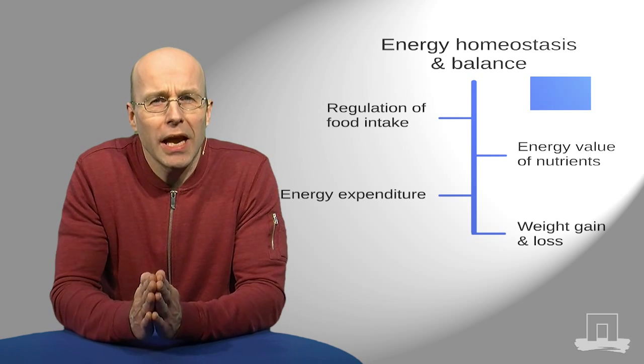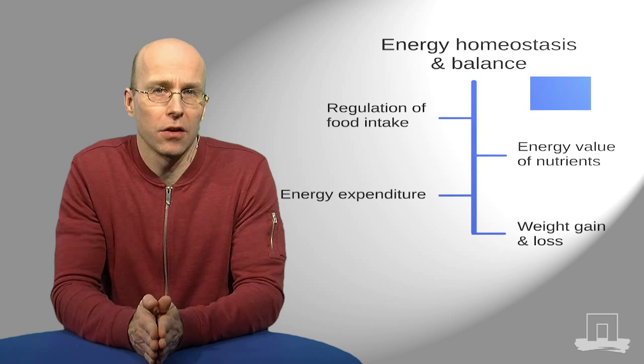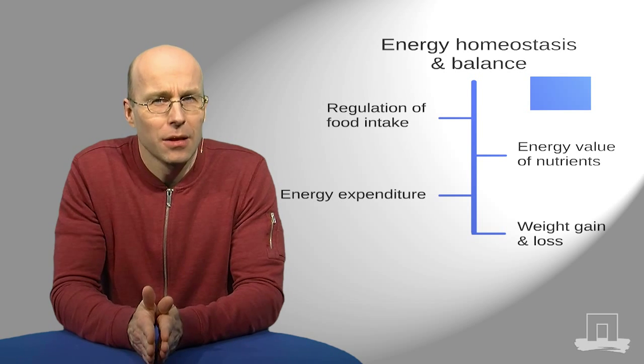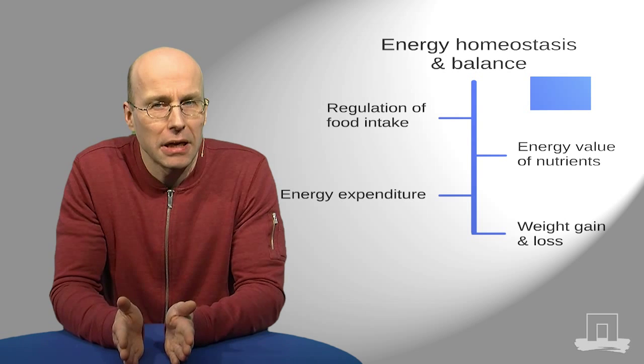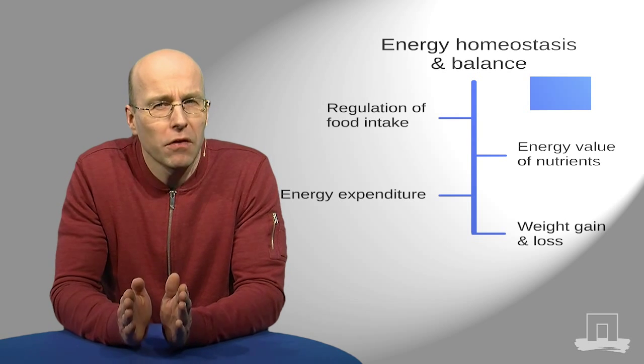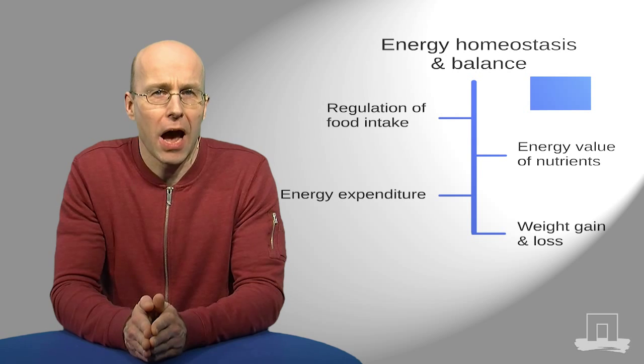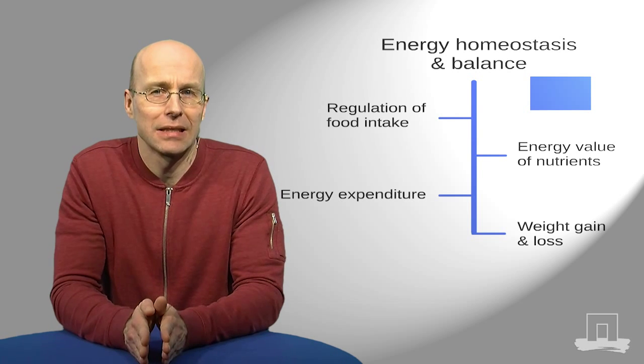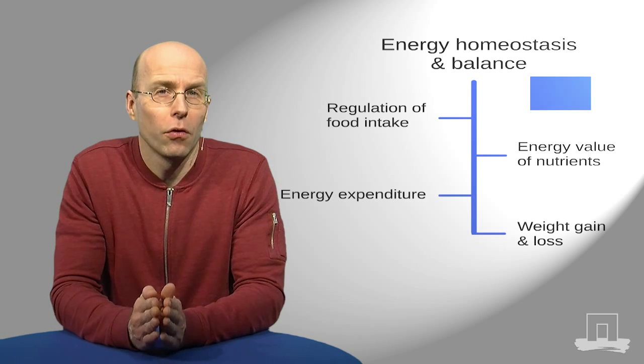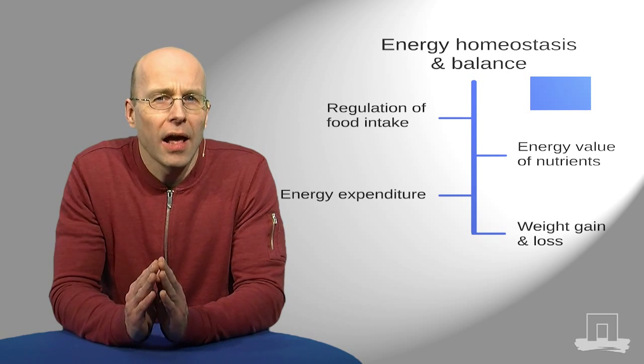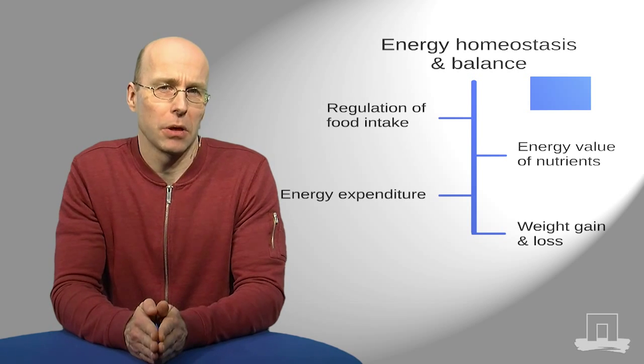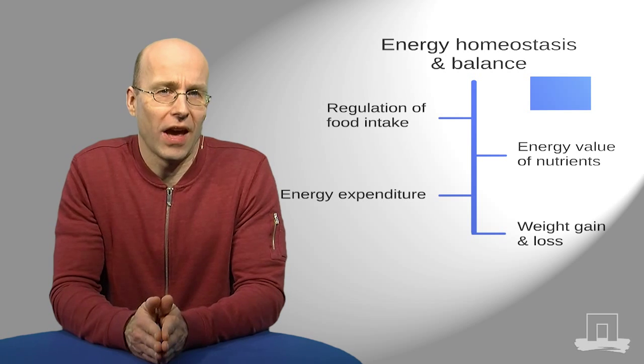And next you'll spend quite a bit of time on the energy value of nutrients. Fats, proteins and carbs, they provide energy. They provide calories. But how does that work? And how did we figure out that one gram of carbohydrate contains four calories and nine calories for one gram of fat? You will watch a video that will explain how we got to those numbers, the so-called Atwater factors.